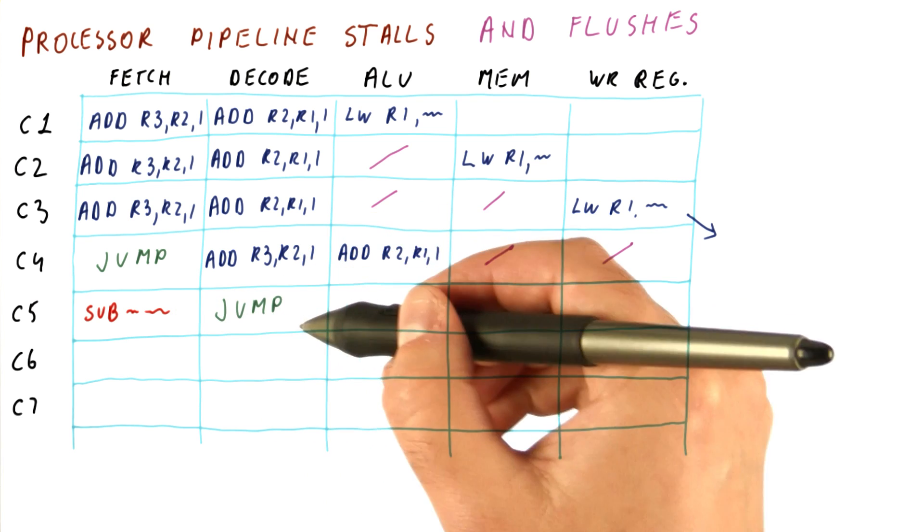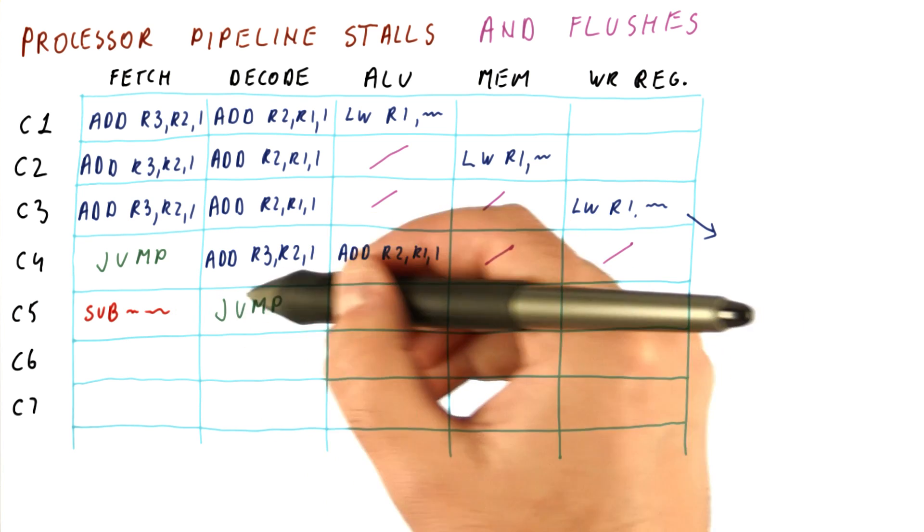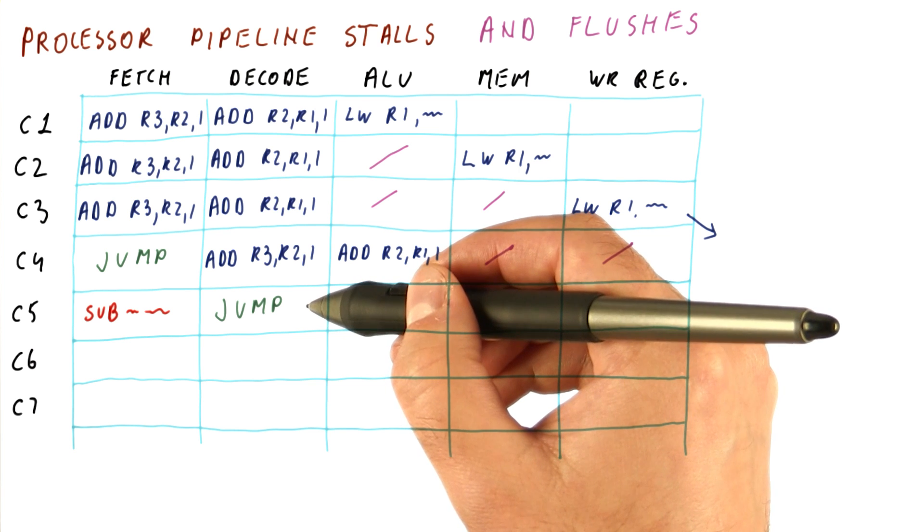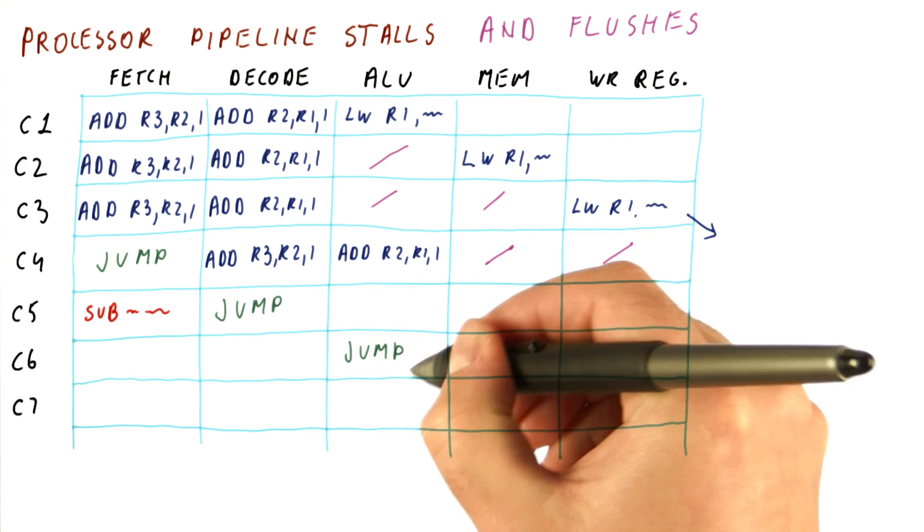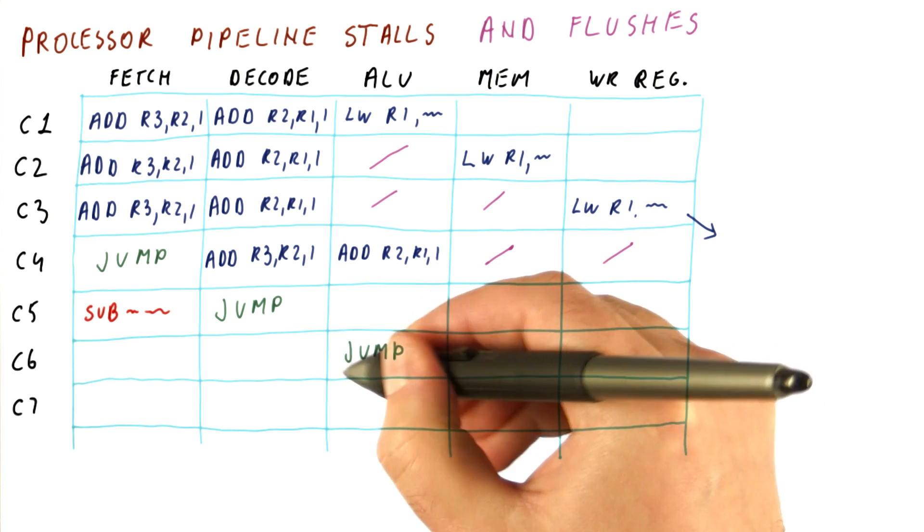Meanwhile, we are decoding the jump. So at the end of this cycle, we will know it's a jump, but we may not know where it's going. So now let's say that here we figure out this is a jump and where it's going.